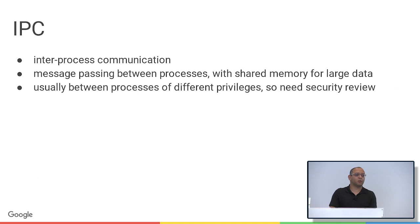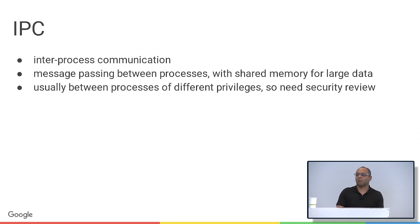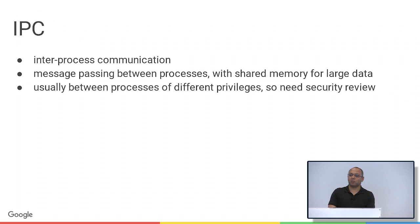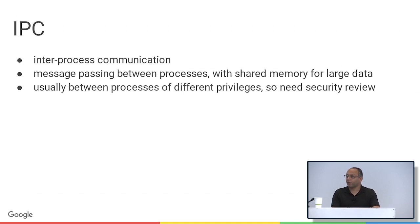I mentioned IPC earlier — that stands for inter-process communication — and it's how all these processes talk to each other. Generally we use message passing, and for any large data we use shared memory. This is usually between processes of different privilege levels. Every time you cross the IPC layer, you have to go through a security review to make sure there aren't any ways for a less privileged process to take over a more privileged one. Usually this is asynchronous communication. We heavily discourage synchronous communication because of performance overhead.